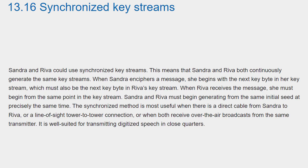This means that Sandra and Reva both continuously generate the same key streams. When Sandra enciphers a message, she begins with the next key byte in her key stream, which must also be the next key byte in Reva's key stream. When Reva receives the message, she must begin from the same point in the key stream. Sandra and Reva must begin generating from the same initial seed at precisely the same time.